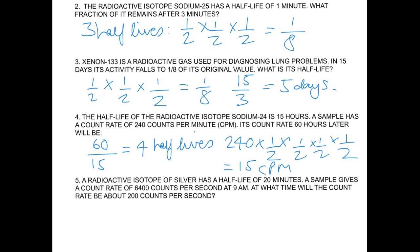Question 5: A radioactive isotope of silver has a half-life of 20 minutes. A sample gives a rate of 6,400 counts per second at 9 o'clock. At what time will the count rate be about 200 counts per second? This sounds hard, but again,